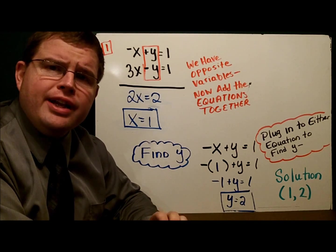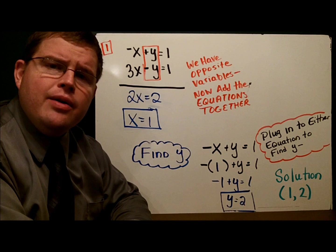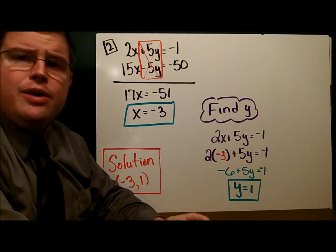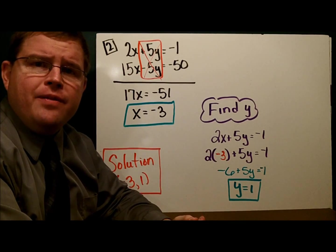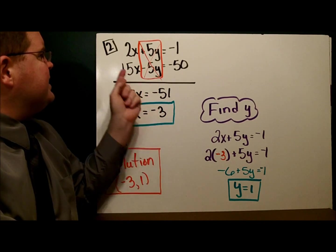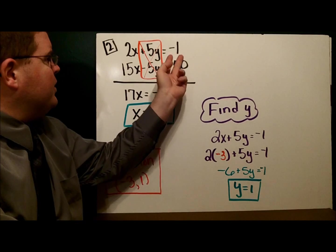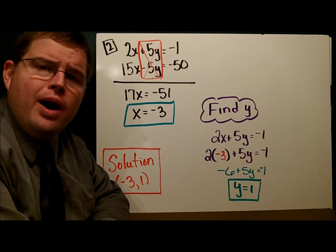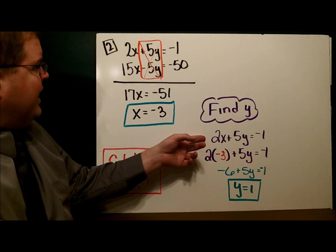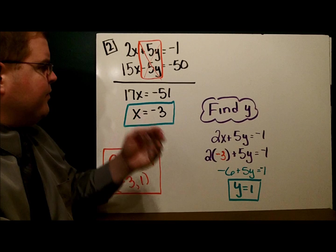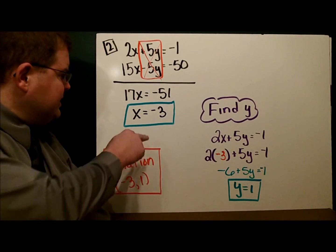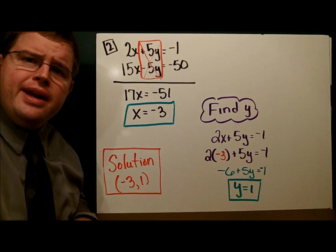Example 2 is set up very similarly to this. Let's see how you did. We have 2x plus 5y equals negative 1, and 15x minus 5y equals negative 50. We have opposite y's and so we're left with 17x equals negative 51. Solve and get x equals negative 3. Now that I have my x value, I have to find the y value that goes along with it. I just pick one of the equations, plug in the negative 3, and that gave me y equals 1. Therefore, the solution to this system is the point (-3, 1).